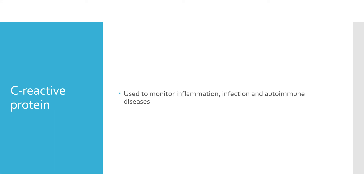C-reactive protein is one type of protein that can trigger the complement cascade. Its levels correlate with the degree of inflammation — high CRP means high inflammation, low CRP means low inflammation. CRP is used clinically to monitor inflammation, infection, and autoimmune diseases. It is elevated in about 70% of all disease states and is used mostly to evaluate bacterial infections, especially in immunosuppressed people, or to monitor post-operative infections.